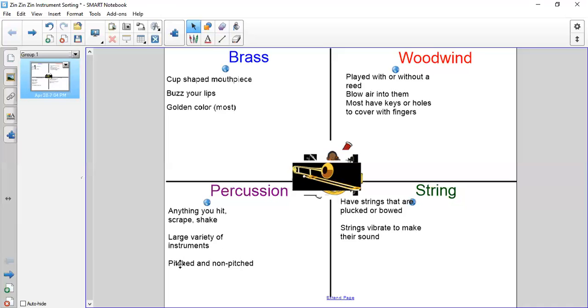Some instruments are able to go high and low—those are pitched, like a xylophone. Some are non-pitched—they don't go high and low, they can't make different notes like a drum. The percussion family sounds something like this.